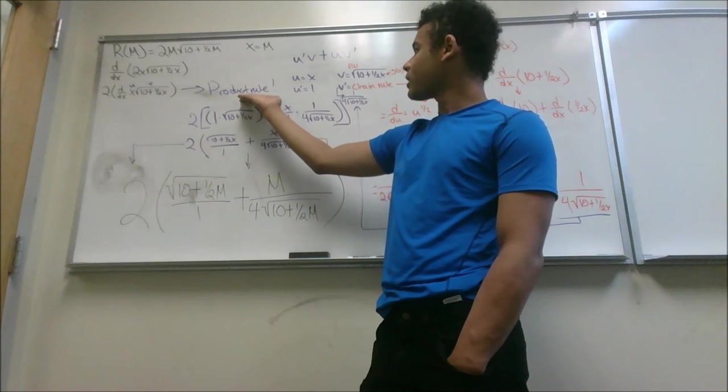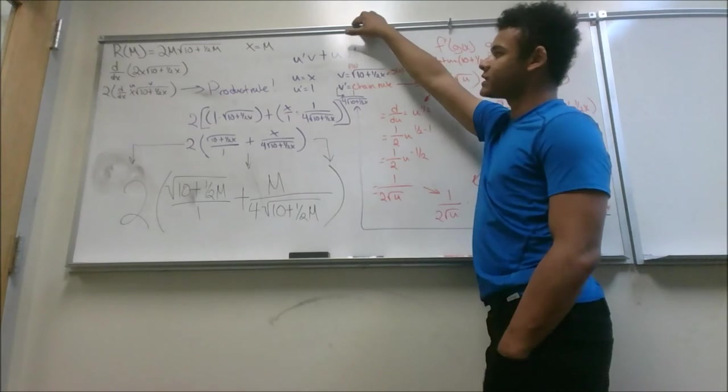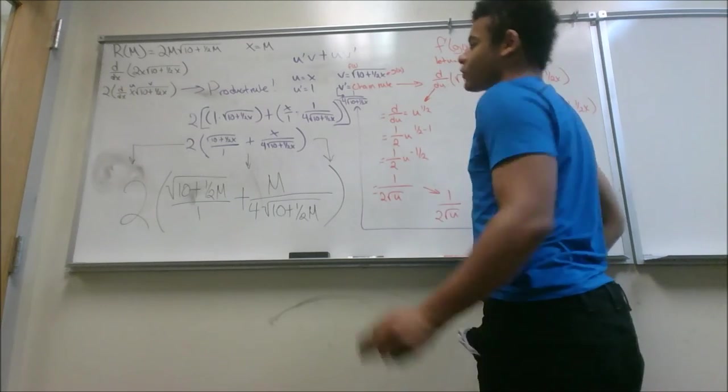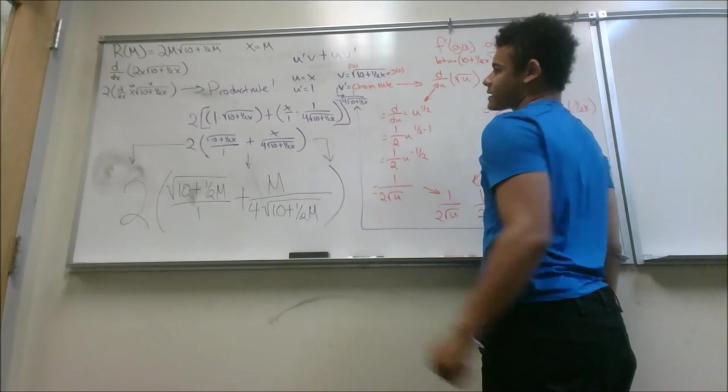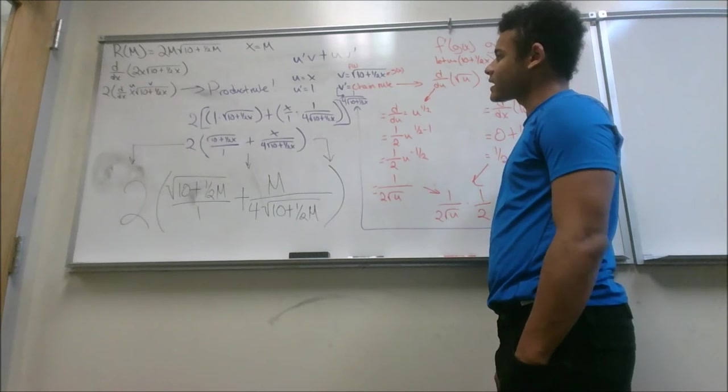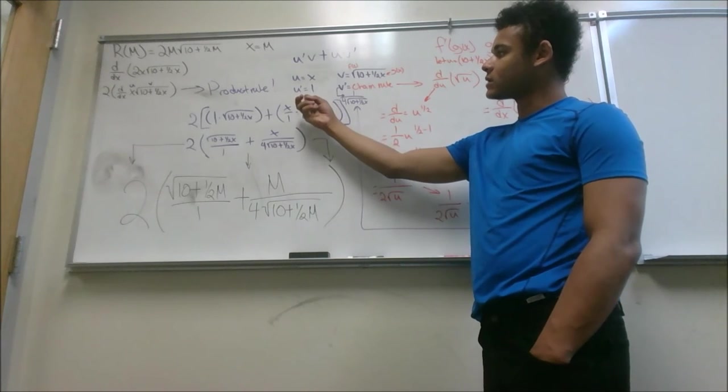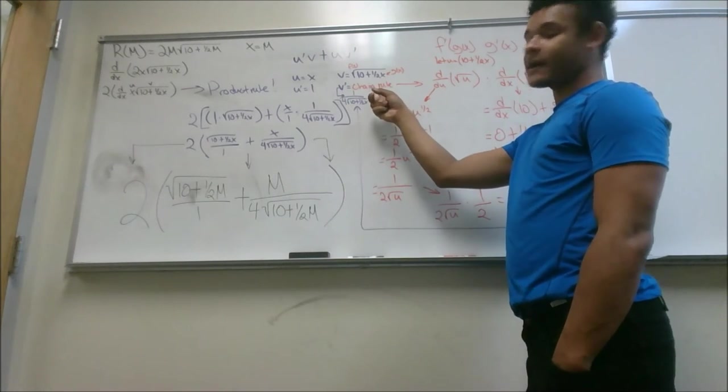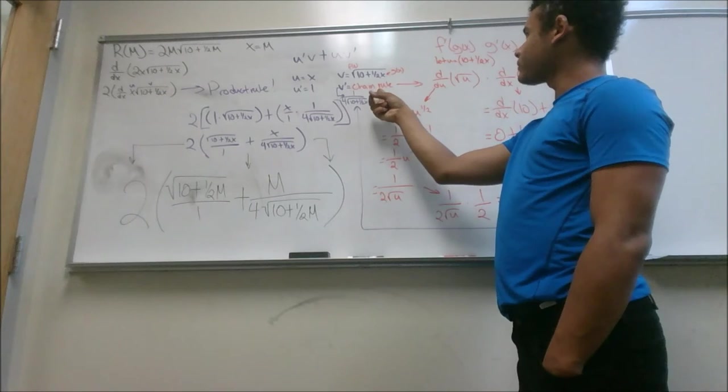Now, we proceed to the product rule. The product rule is U prime V plus U V prime. As I stated before, U is X and V is the square root of 10 plus 1 half X. We see that the derivative of X is 1. That will be U prime. But in order to get V prime, we then have to use the chain rule.